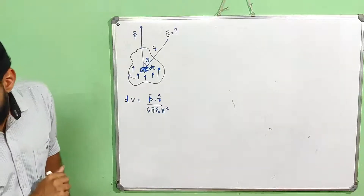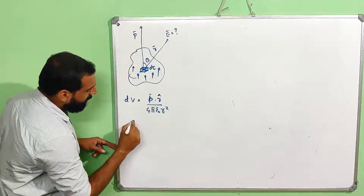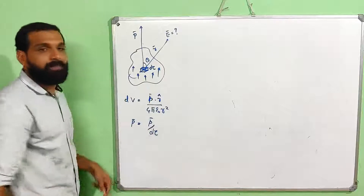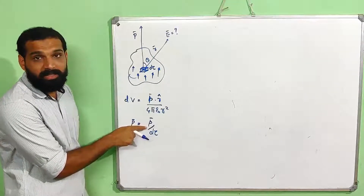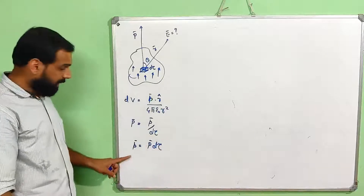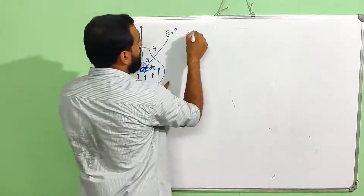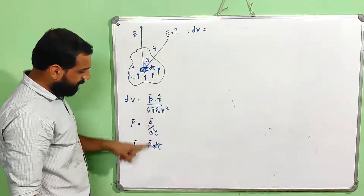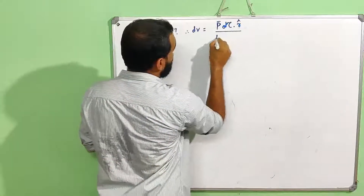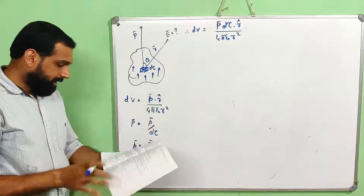The potential due to a single volume element is given by p dot r-cap divided by 4 pi epsilon 0 r squared, where p is the dipole moment per unit volume. This small letter p equals capital P times d-tau. Dipole moment equals polarization into volume. This is the total potential.